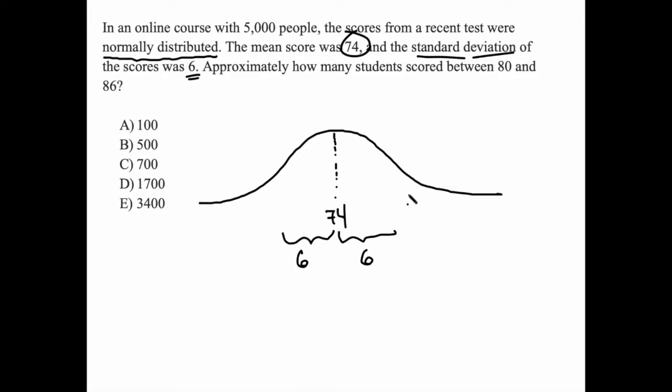So one standard deviation above the mean would put us right here at 80. And one standard deviation below the mean would put us 6 below, so at 68. And we can keep going. Another standard deviation up puts us at 86, and another standard deviation down puts us at 62. So there's that distance of 6.